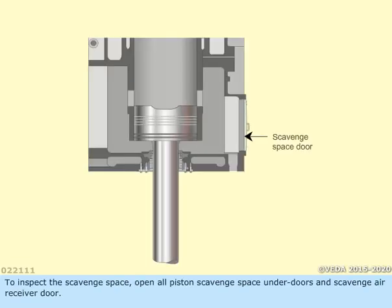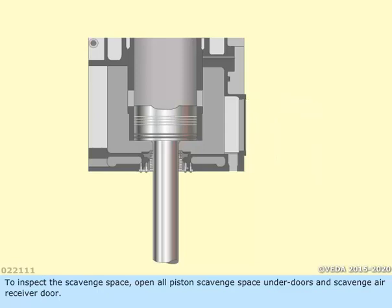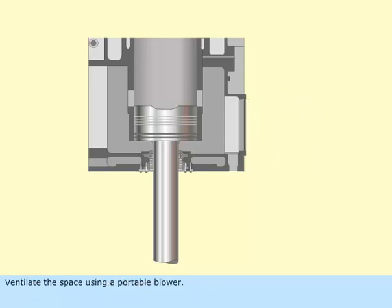To inspect the scavenge space, open all piston scavenge space under doors and scavenge air receiver door. Ventilate the space using a portable blower.